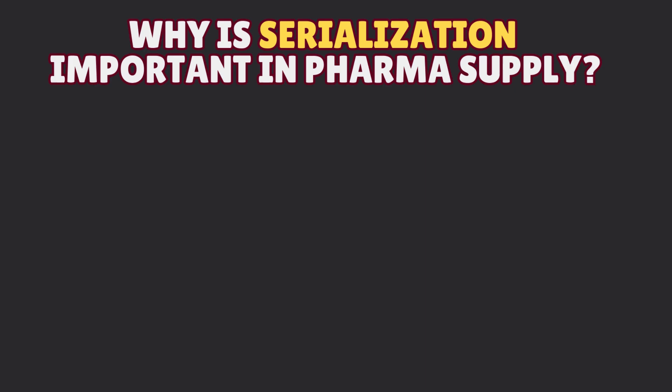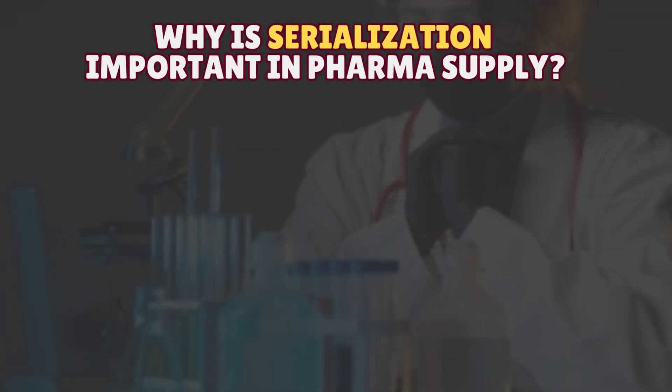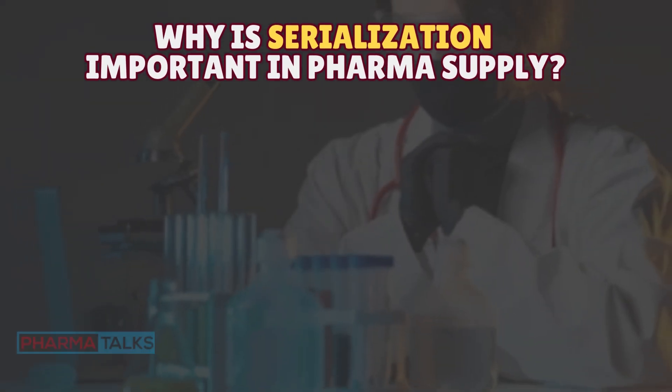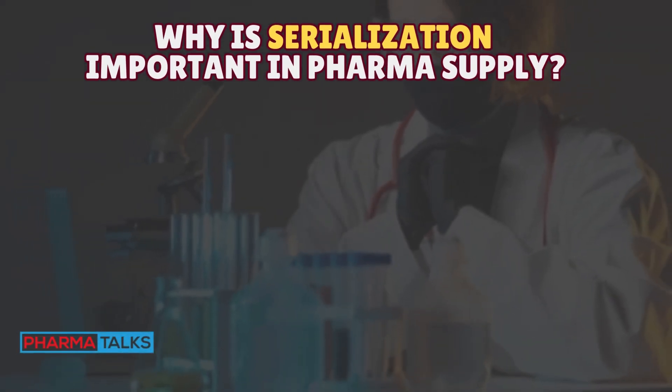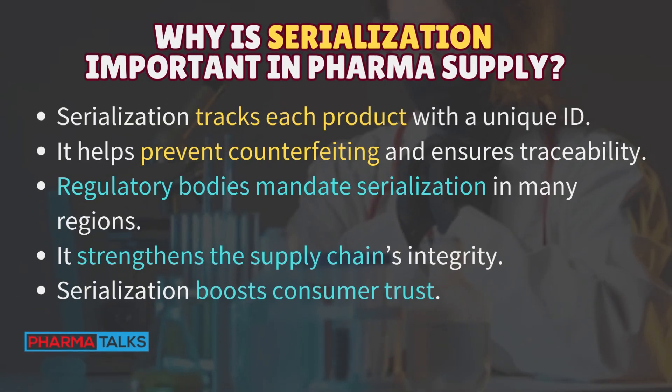Why is serialization important in pharma supply? Serialization tracks each product with a unique ID. It helps prevent counterfeiting and ensures traceability. Regulatory bodies mandate serialization in many regions. It strengthens the supply chain's integrity. Serialization boosts consumer trust.